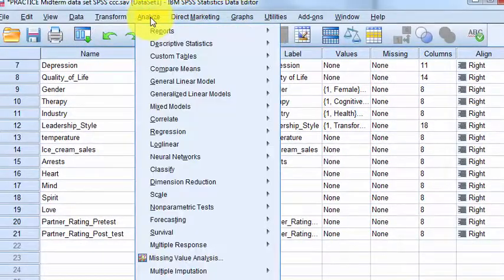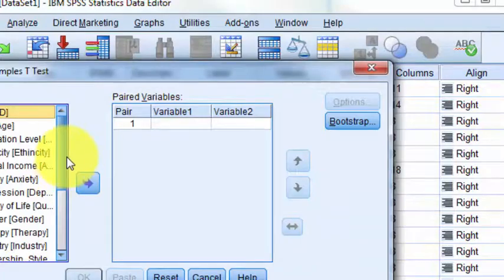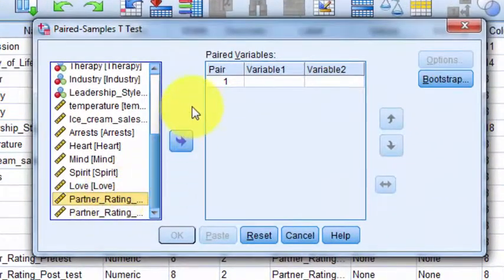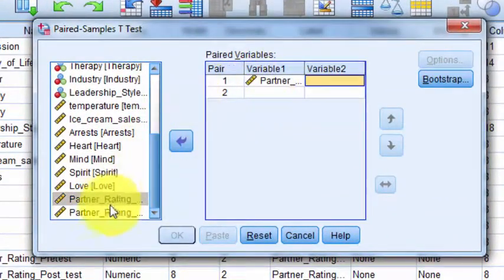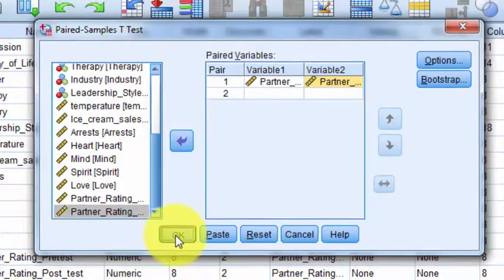We're going to go to Analyze, Compare Means, because that's what t-tests do. And we're going to go to paired t-tests. And scroll down. We want partner rating pre, that's our first variable. Partner rating post, that's our second variable. Nothing over here. Click OK.